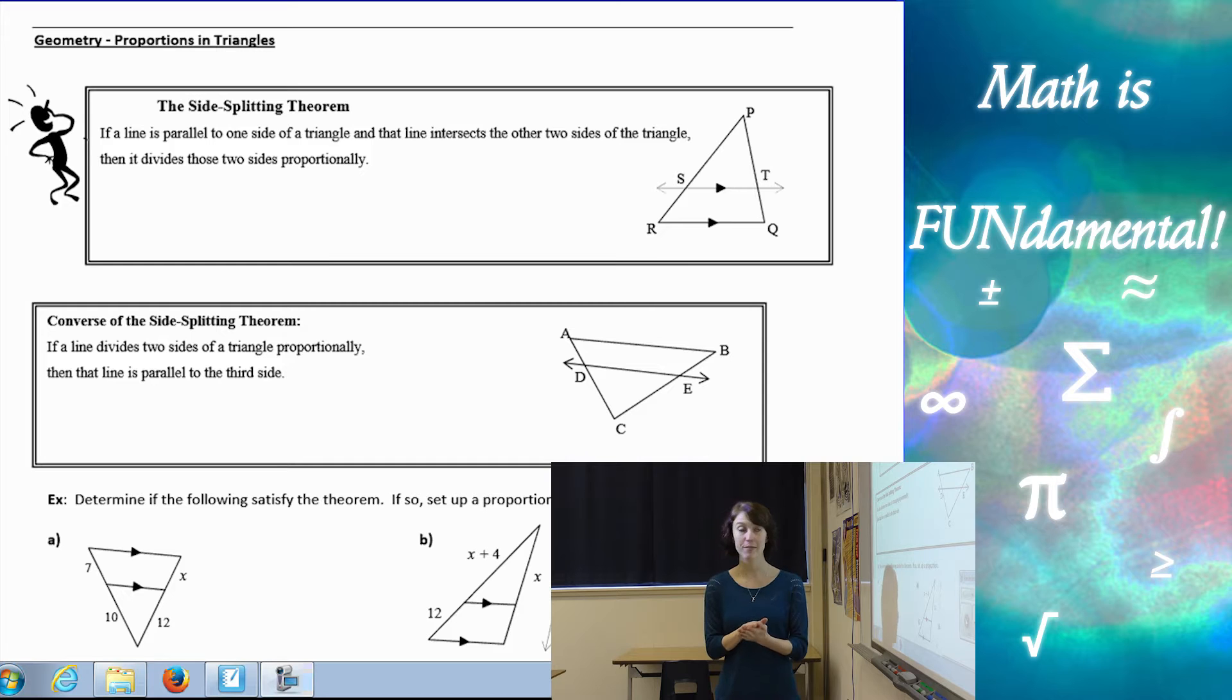The first theorem is called the side splitting theorem. It says if a line is parallel to one side of a triangle and the line intersects the other two sides of the triangle, then it divides those two sides proportionally.